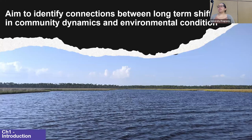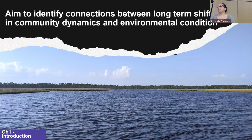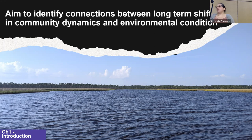Chapter one is focused on long-term changes in necton communities influenced by climate change. The aim is to identify long-term trends in Alabama necton community dynamics and identify existing connections between community dynamic shifts and environmental conditions. By gaining a better understanding of what environmental factors have influenced abundances of necton species in Mobile Bay in the past, we can hopefully better predict necton community dynamics under future climate scenarios.